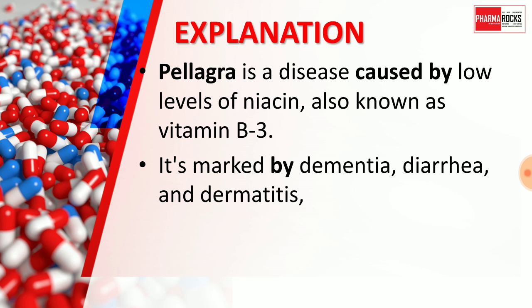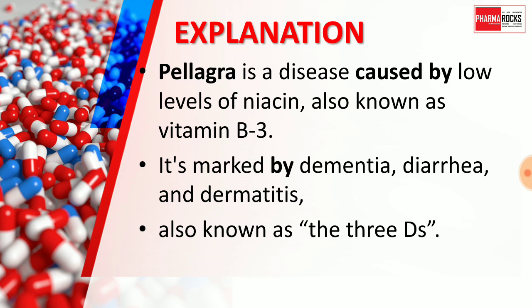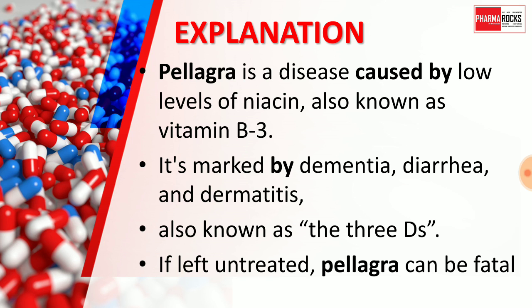Pellagra is marked by dementia, diarrhea, and dermatitis — also known as the 3 Ds. So the 3 Ds are: 1st — dementia, 2nd — diarrhea, 3rd — dermatitis. Pellagra is also called the disease of the 3 Ds. If left untreated, pellagra can be fatal. Pellagra disease is caused by a low level of niacin, also known as Vitamin B3.